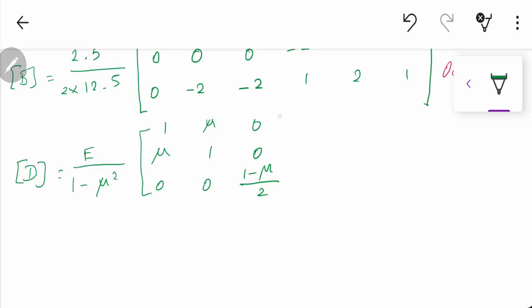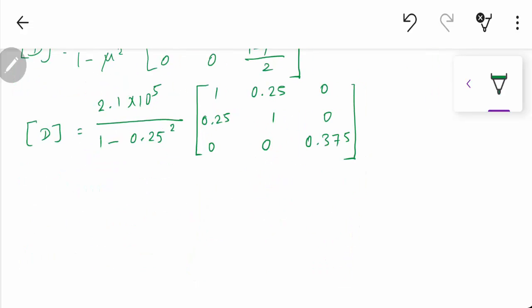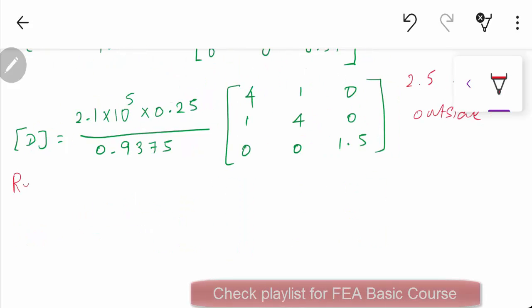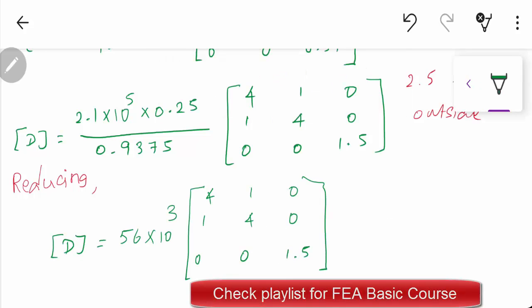The constitutive or stress-strain relationship matrix for a plane stress element: substitute all the corresponding values and you will get the matrix. 0.25 is taken outside, reducing this value. You will get the matrix like this.